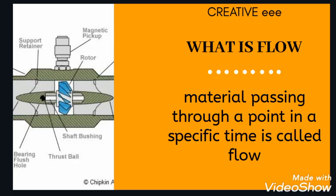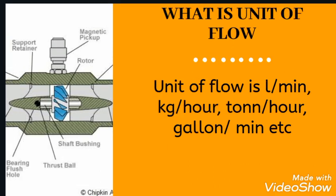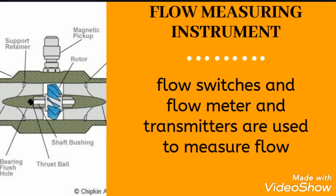What is flow? Material passing through a point in a specific time is called the flow of that material. That may be a fluid or a solid material. What is the unit of flow? The unit of flow is liter per minute. It may be kg per hour, ton per hour, gallon per minute, and there are many more.